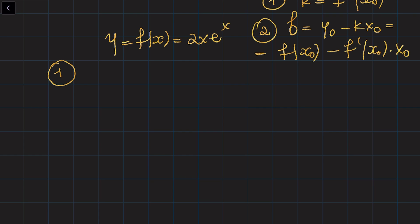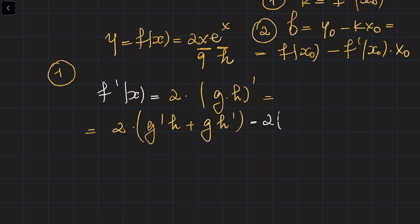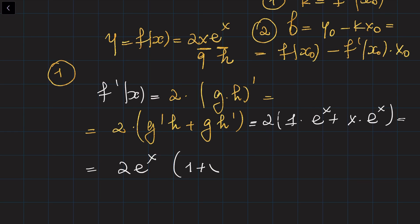First of all, we need to find the derivative of this function. We are going to use the product rule. Let's denote g equals x and h equals e to the power of x. Then the derivative of 2 times g times h is going to be 2 times (g prime h plus g h prime). The derivative of g is 1, so we get 2 times (1 times e to the power of x plus x times e to the power of x). We can factor out e to the power of x, leaving 2 times e to the power of x times (1 plus x).